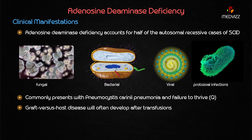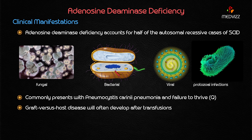Adenosine deaminase deficiency accounts for approximately 50 percent of the autosomal recessive cases of SCID. SCID is associated with severe and repeated fungal, bacterial, viral, and protozoal infections before the first year of life. Symptomatology typically presents approximately from 45 days to two months after birth, and the symptoms are very severe at that time.